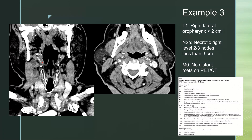This tumor in the right lateral oropharynx measures less than two centimeters in maximum dimension. There are necrotic right level two and three nodes, but they measure less than three centimeters each. On a PET CT that was performed, there were no distant metastases. So our final staging would be T1N2BM0.